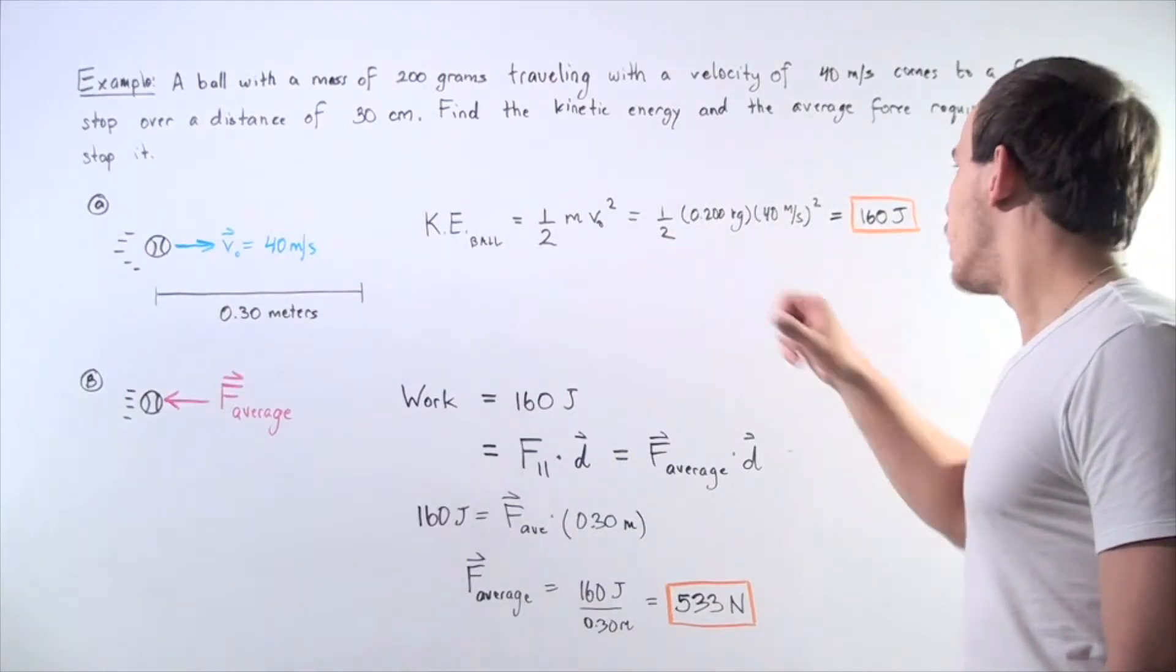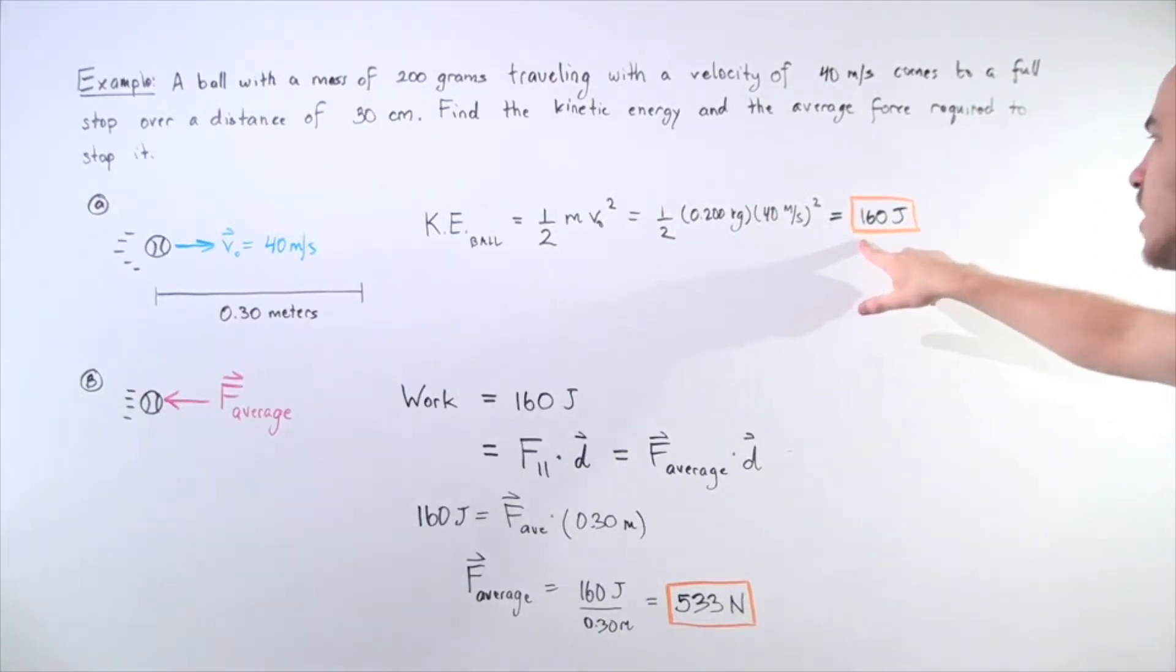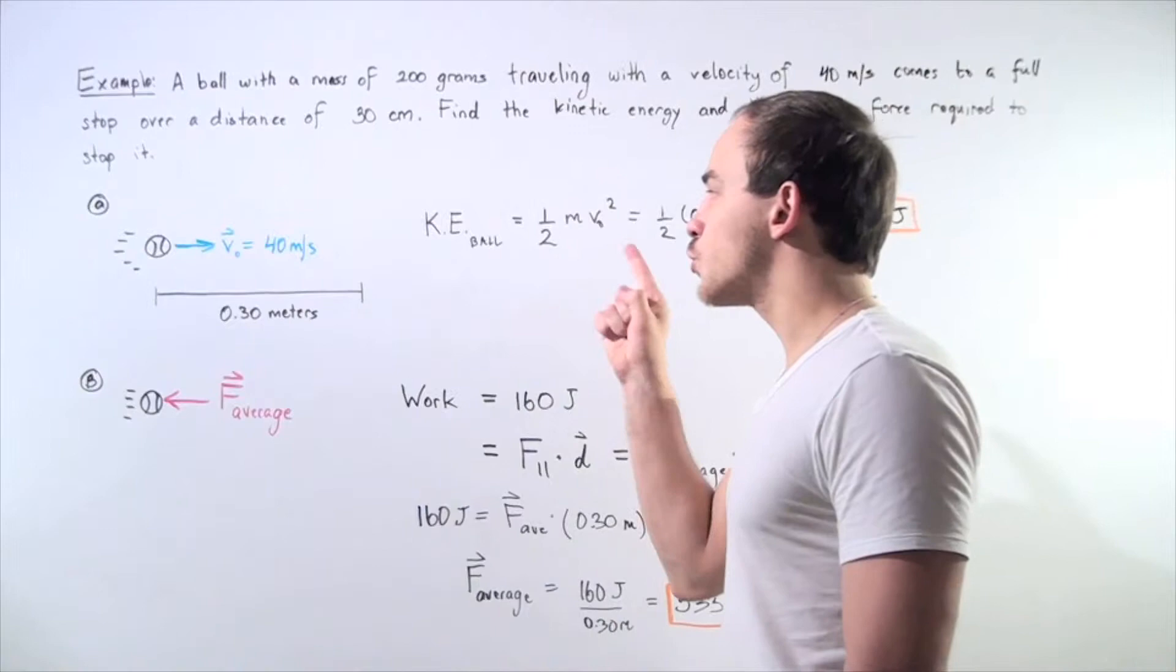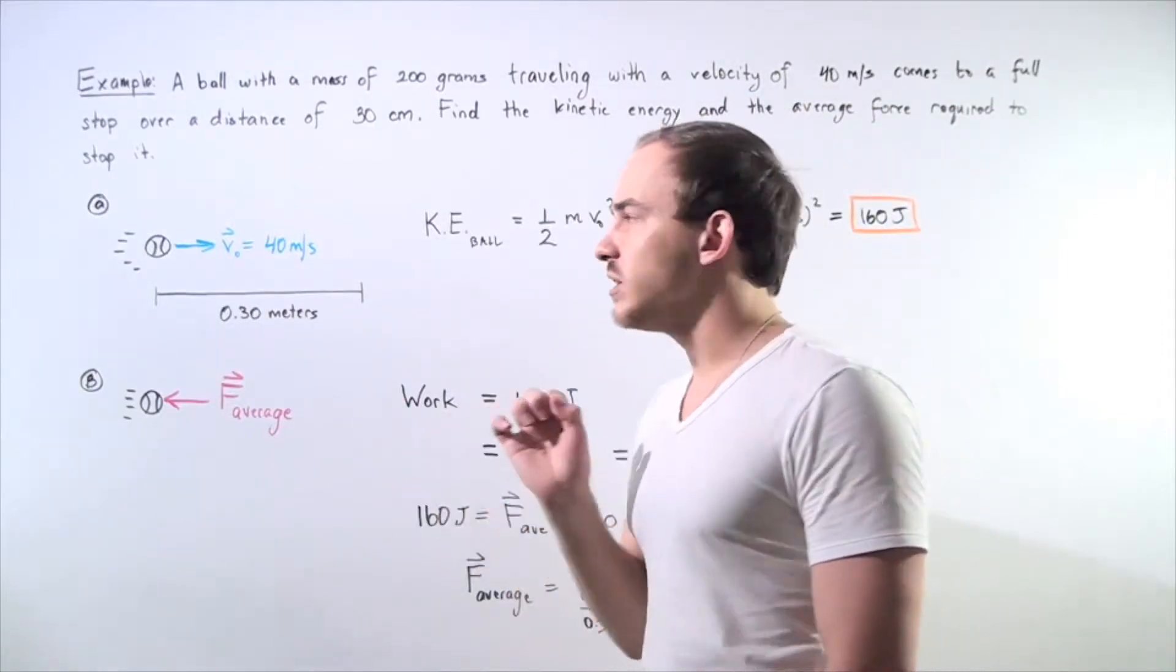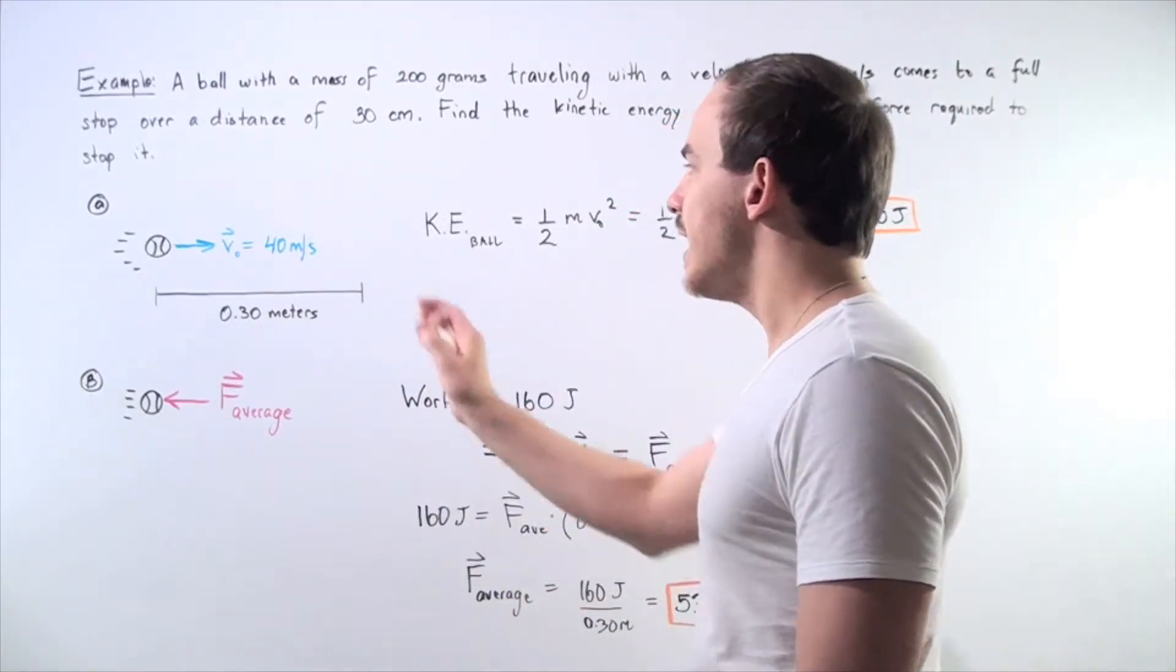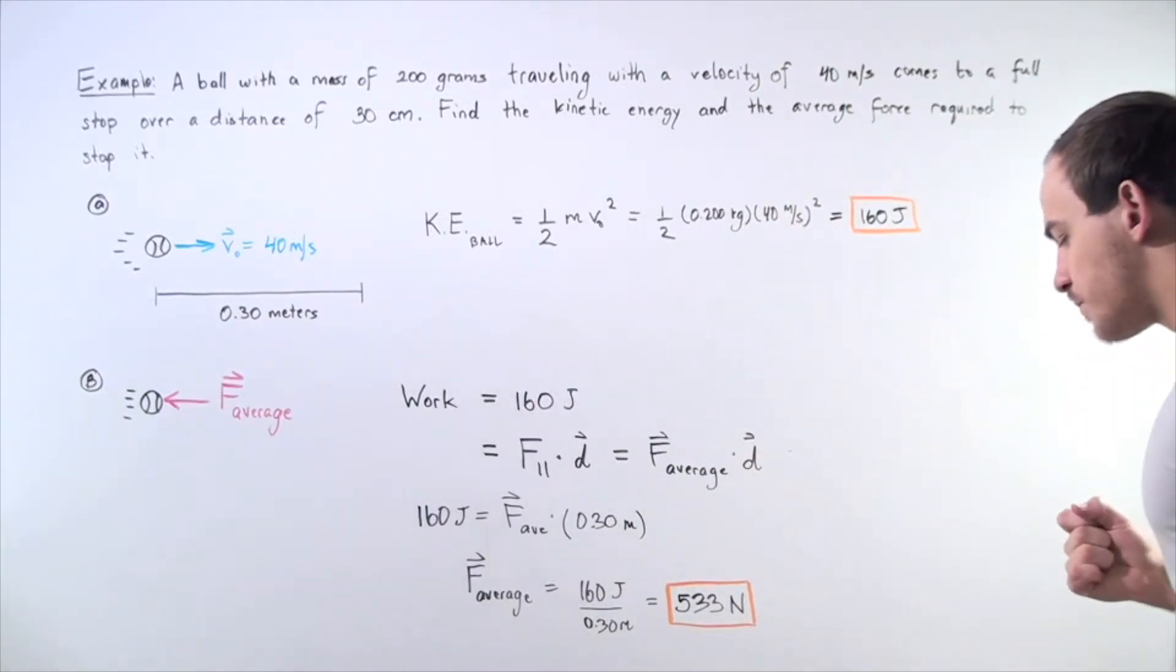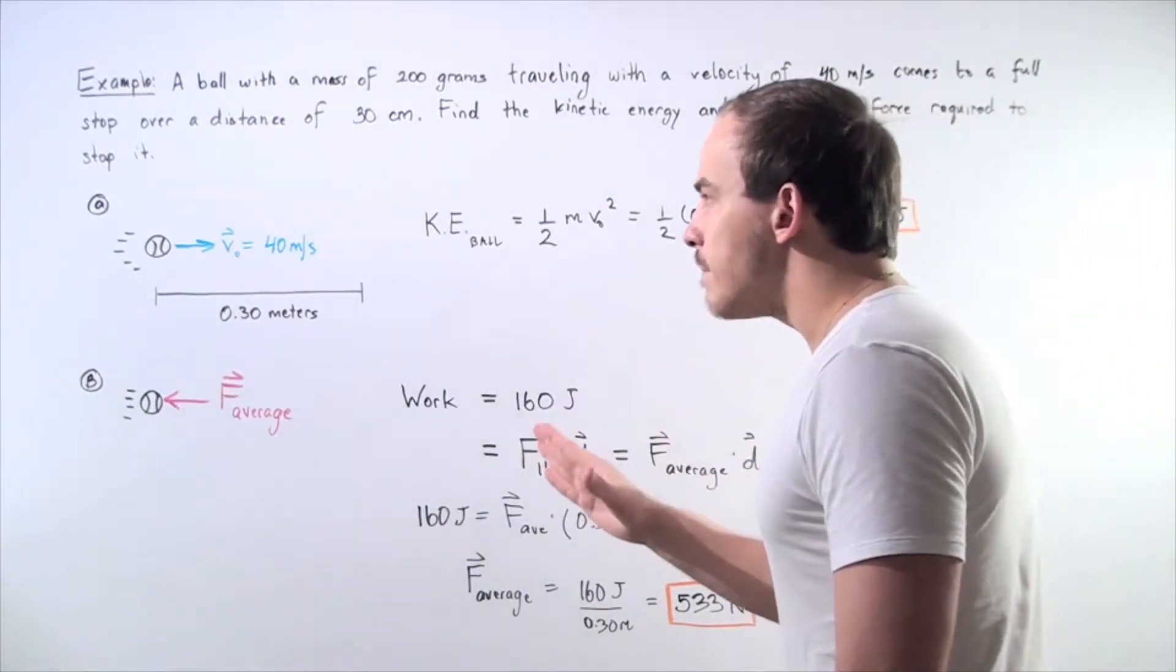Multiply these two things out, multiply by one-half and we get 160 joules. So initially when our object has a mass of 200 grams and is moving with a velocity of 40 meters per second, it has a kinetic energy of 160 joules.